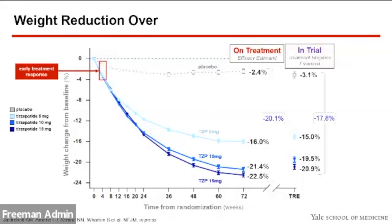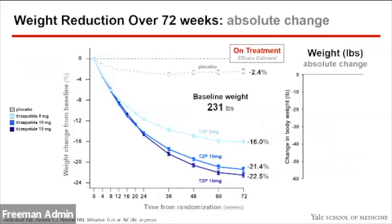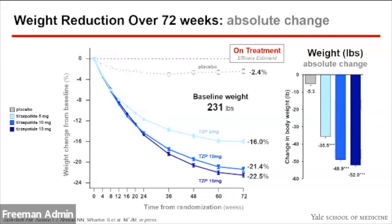Notable findings: there was an early treatment response even at four weeks in the tirzepatide groups, and the 10 and 15 milligram doses resulted in relatively similar weight reduction. In terms of absolute weight change — the baseline weight was 231 pounds — placebo lost 5.3 pounds, while tirzepatide groups lost 35.5, 48.9, and 52 pounds respectively, resulting in an average weight reduction of 35 to 52 pounds. Some participants lost more, some less.